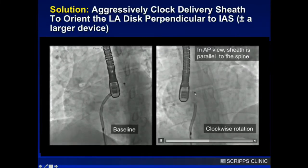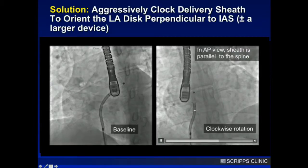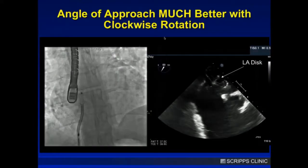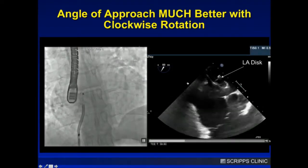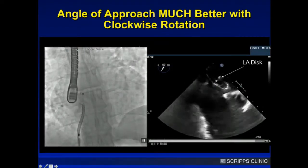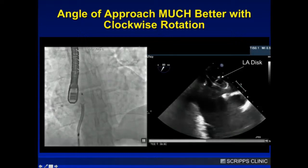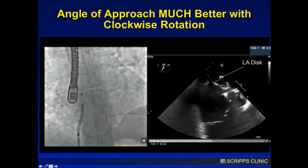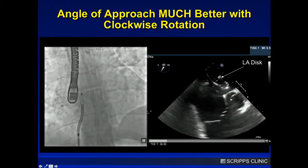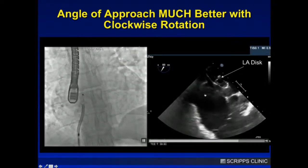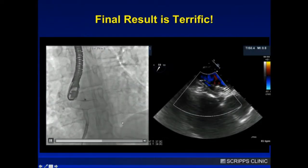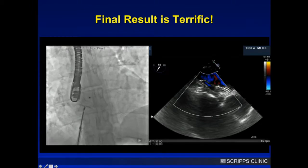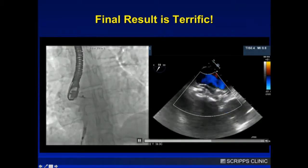I've clocked it aggressively, and now my sheath is straight up and down. You can see what that looks like on Echo — TEE. I have my left disc here; now I'm clearly coming in right, so I'm going to catch the aortic bulb right here and will not slip through. And then as you pull it back, you can catch that aortic rim really nicely and have a great result.